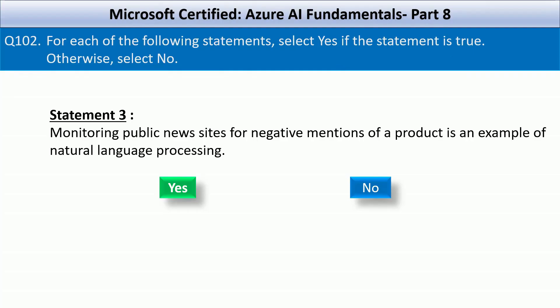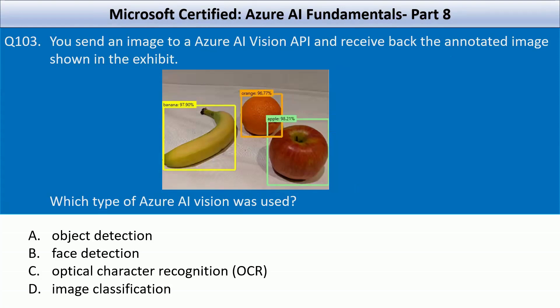Question number 103. You send an image to an Azure AI vision API and receive back the annotated image shown in the exhibit. Which type of Azure AI vision was used? Look at the image carefully before looking at the options. Your options are object detection, face detection, optical character recognition, image classification. This image shows bounding boxes around different fruits, each labeled with a category and a confidence percentage — this is a characteristic of object detection. Do not confuse this with image classification — in the case of image classification, the output would simply state the most likely label for the entire image, for example 'fruits', without drawing any bounding boxes or identifying individual objects.